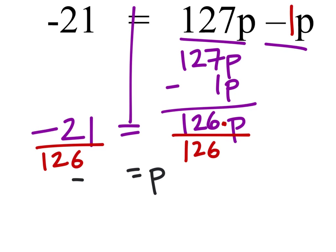21 divided by 126. We can see that both of these are divisible by 3 because when we add the digits together, they give us a multiple of 3. So 21 divided by 3, we know that one to be 7 already.